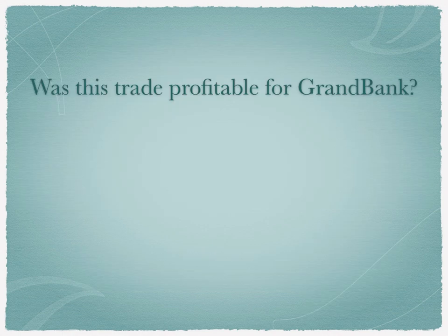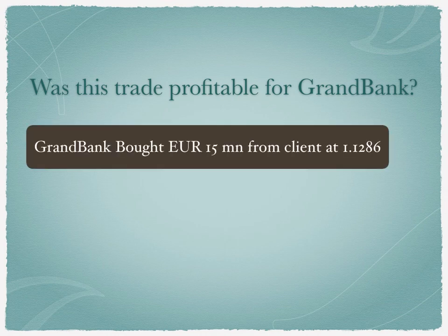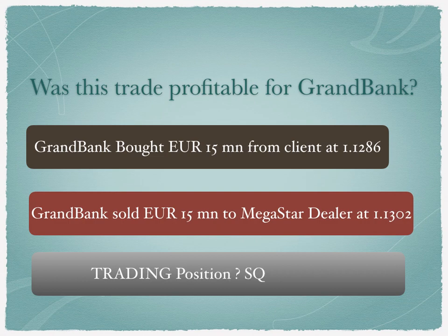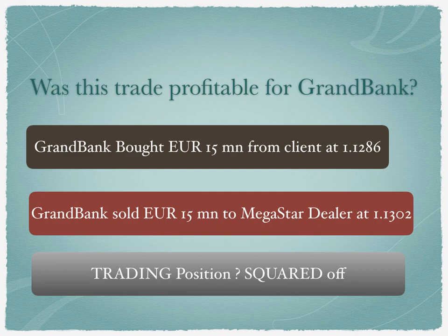Was this trade profitable for Grand Bank? Grand Bank bought EUR 15 million from the client at 1.1286 and sold EUR 15 million to Megastar dealer at 1.1302. Since Grand Bank sold EUR at a higher rate than it bought, it has made a profit. Since Grand Bank has bought and sold 15 million EUR, the trading position is squared off — meaning Grand Bank has no remaining EUR exposure. In the last two slides we discussed client orders, interbank orders, and how client orders get covered in the interbank market.